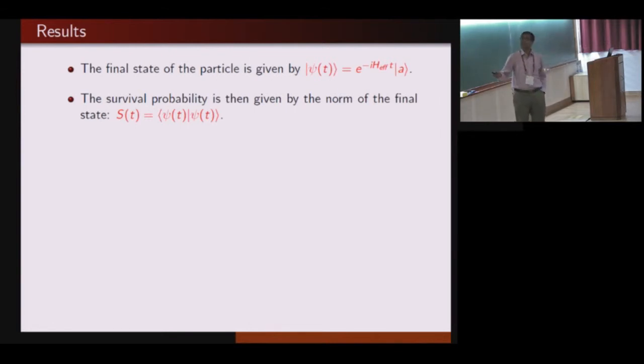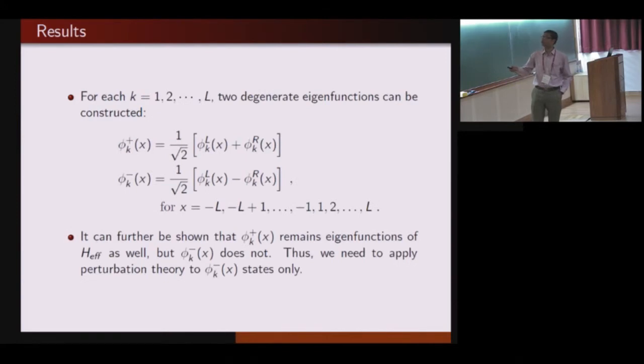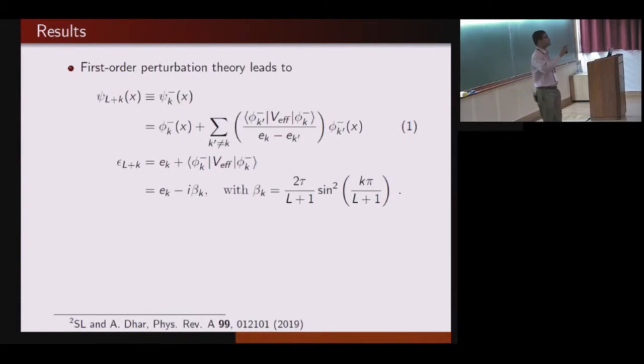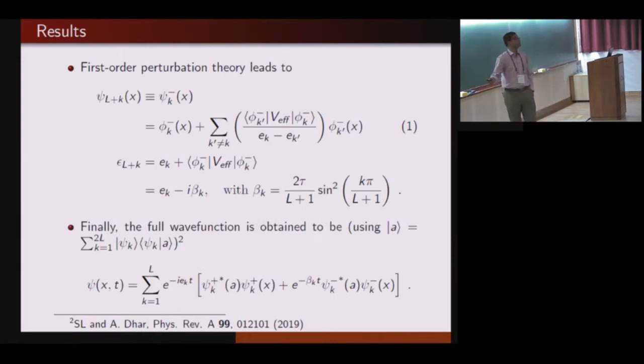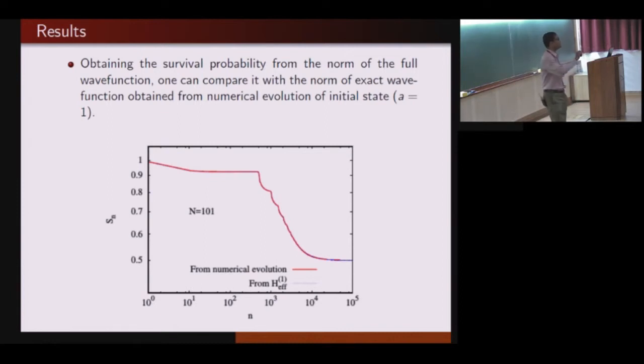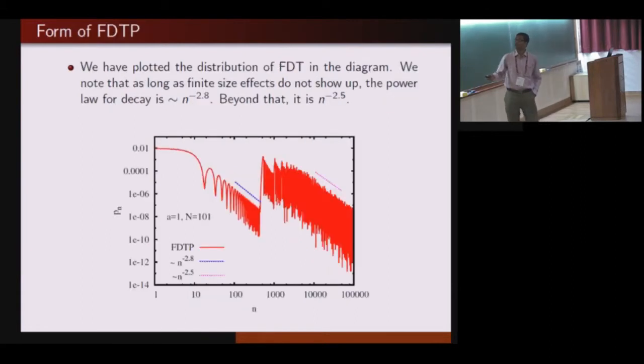The norm of this wave function at any time will give us the survival probability. Let me skip the calculations. It's basically solving doubly degenerate perturbation theory, because the two parts of the system Hamiltonian are equivalent, up to first order. Using first order perturbation theory, we arrive at the final wave function. When we take the norm of the wave function and compare it to the exact simulation, where we explicitly apply projection operator followed by unitary evolution, the norm of this wave function agrees to a very good accuracy. If you take the derivative of this quantity, it gives the first detection time. It has two different behaviors because the particle detects the finite size effects of the lattice.